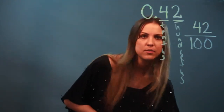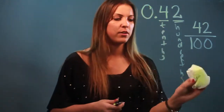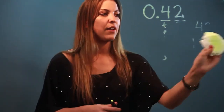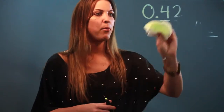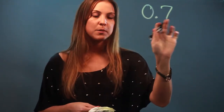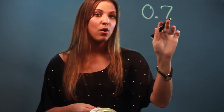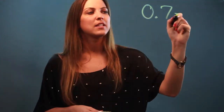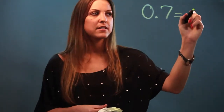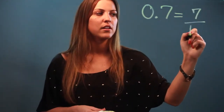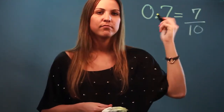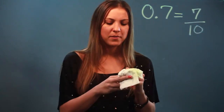So same concept, I'll do a different example with you in case you have another problem. If I had 0.7 and I wanted to make that into a fraction, I just have to see what place my 7 is in, and the first place after the decimal is called the tenths place. So since it's the tenths, I'm doing 7 over 10, and that's all there is to it.